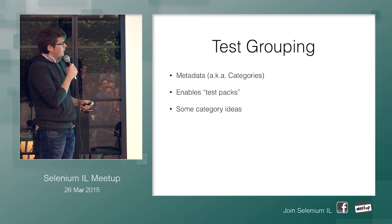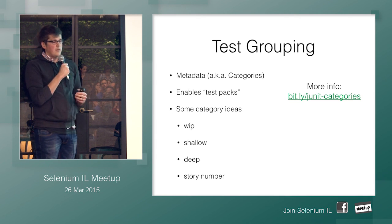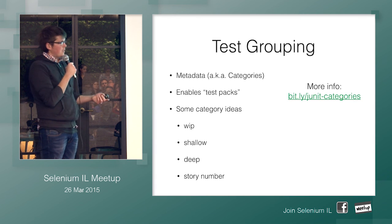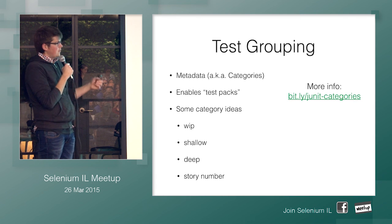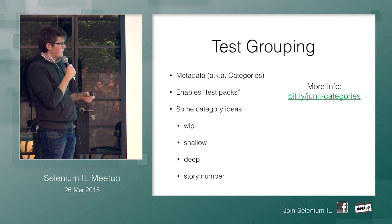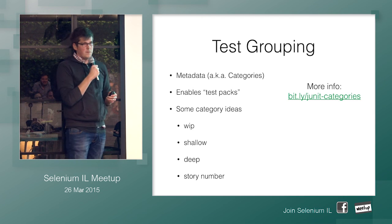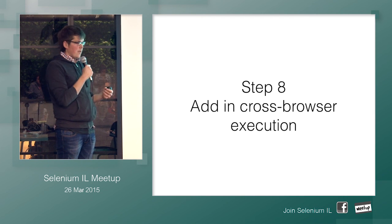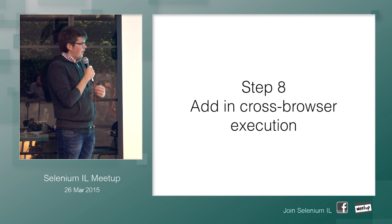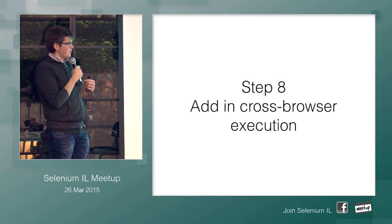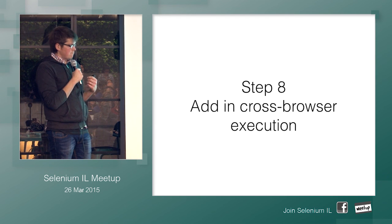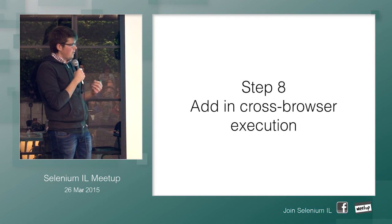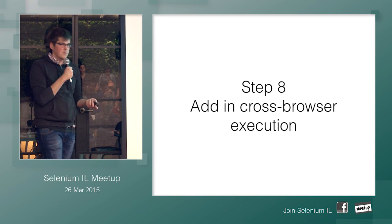You just create an interface for each category and then use that in the annotation — it's very simple, the documentation explains it. So once you have all that, then you're ready to add in cross-browser execution. Ideally, now your tests are running in parallel with flexible execution, and we want to run them on different browsers.